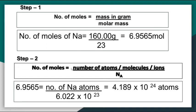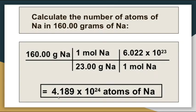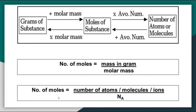Step 2: Using the formula — number of moles = number of atoms ÷ Avogadro's constant. We already calculated number of moles as 6.9565. Multiply this by Avogadro's constant. We obtain number of atoms = 4.189 × 10²⁴ atoms of sodium.